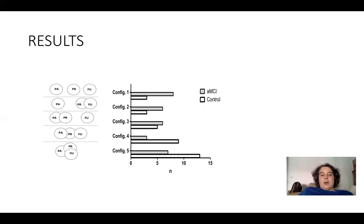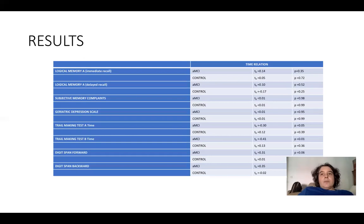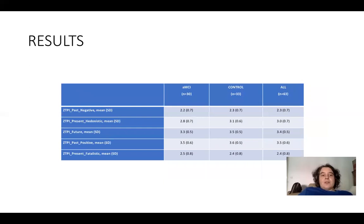Results revealed that the MCI group tended to choose configuration one, meaning the unrelated configuration. We then examined whether there was a relationship between this choice and the cognitive profile of participants. A significant correlation emerged between time relations performance and Trail Making Test B, digit span, and digit span backwards in the MCI group, meaning that the better the performance of MCI patients, the more related the configuration they tended to choose.